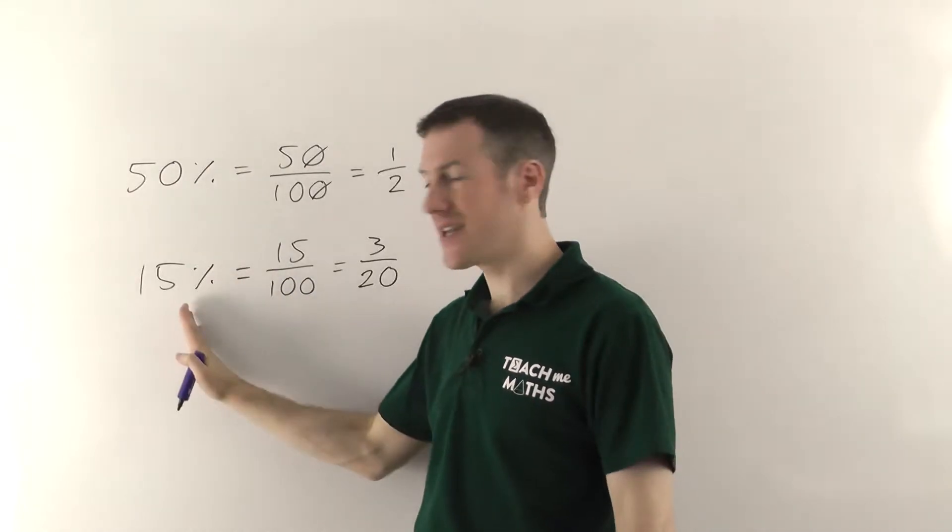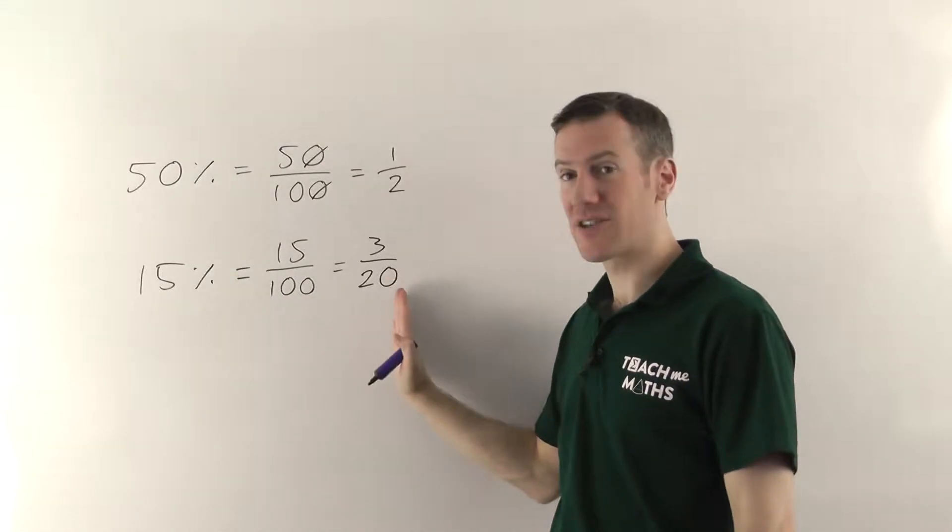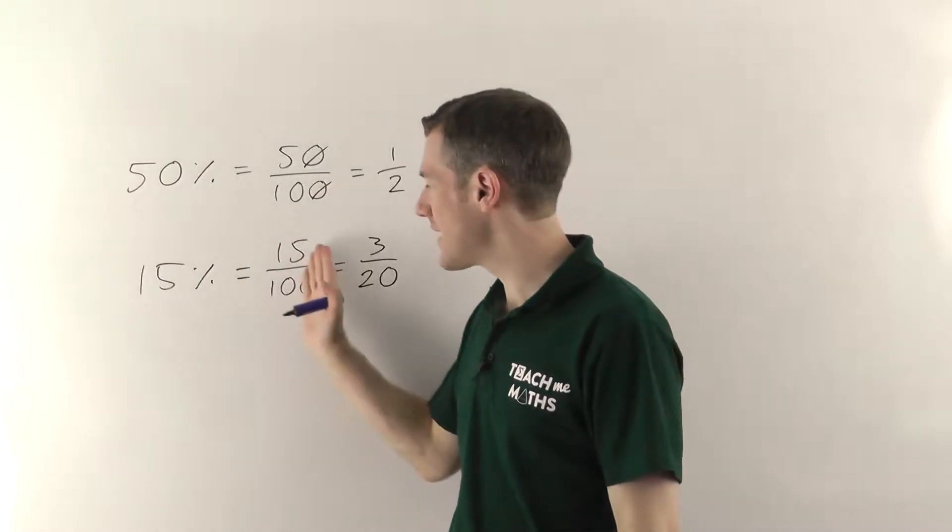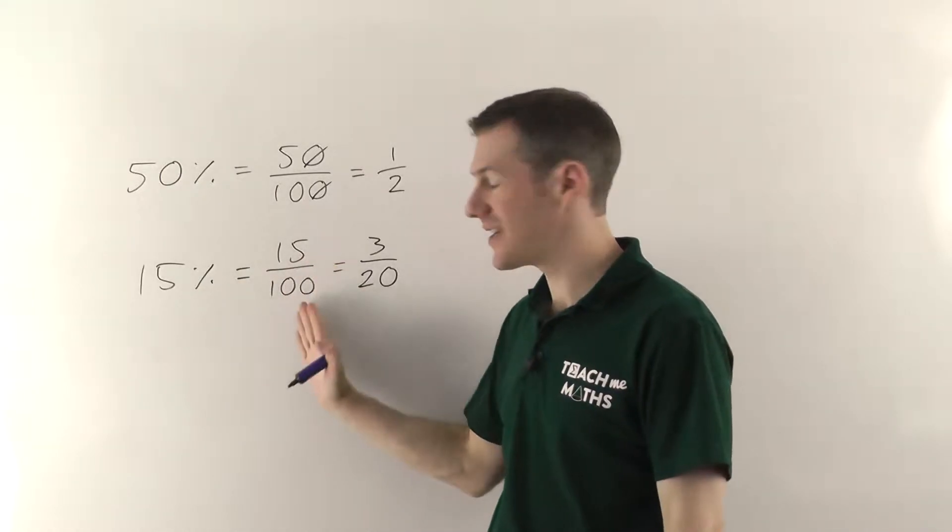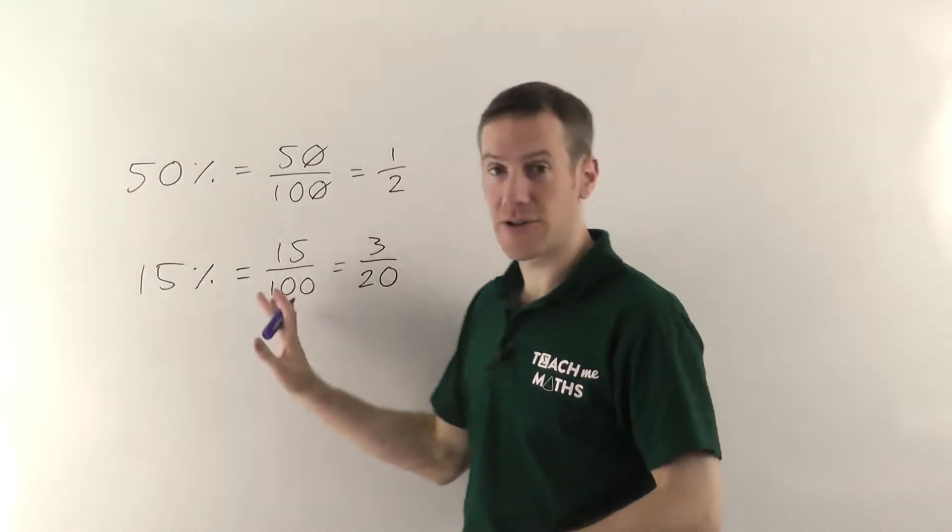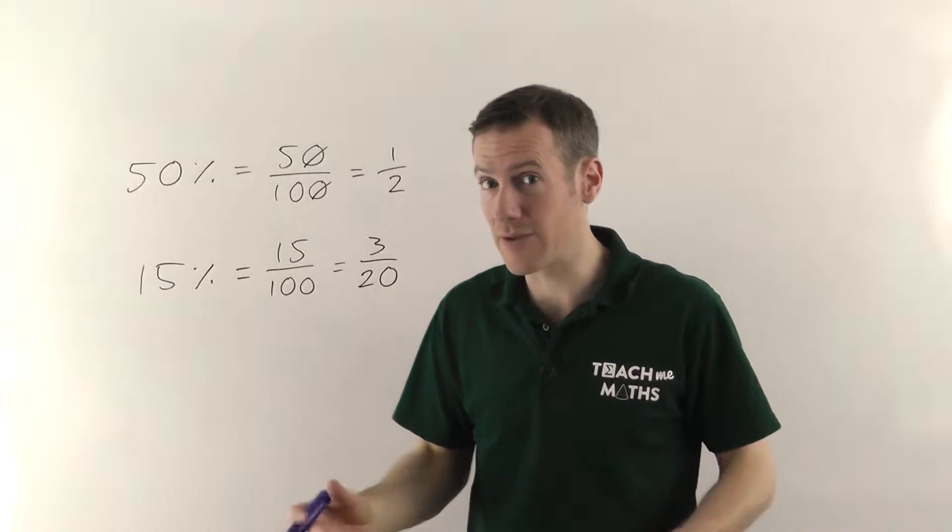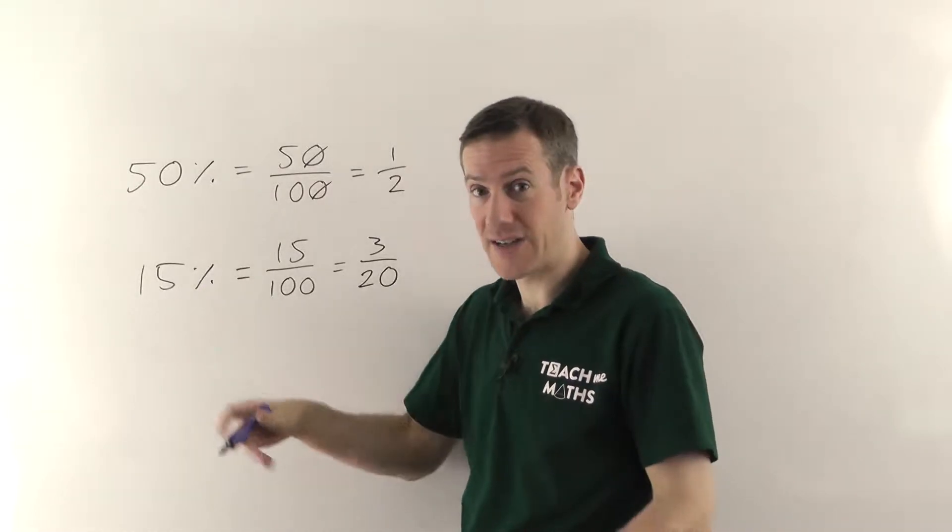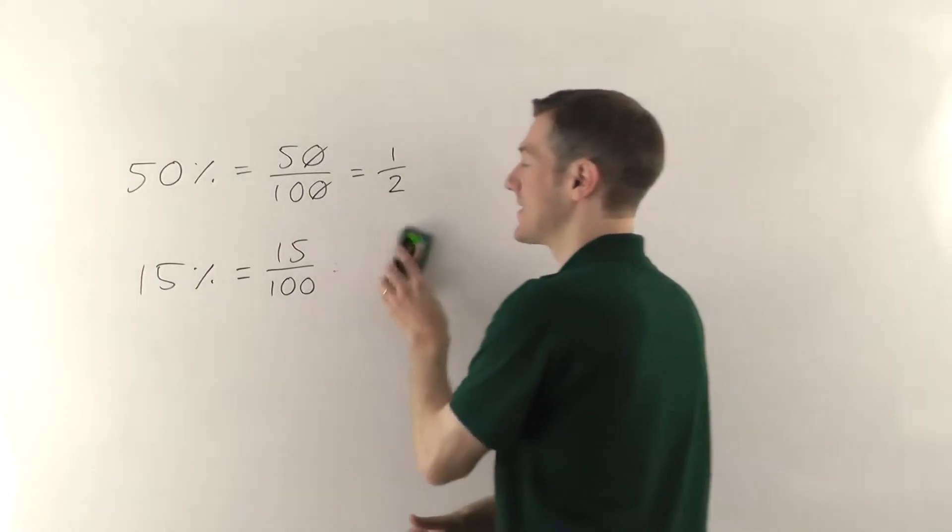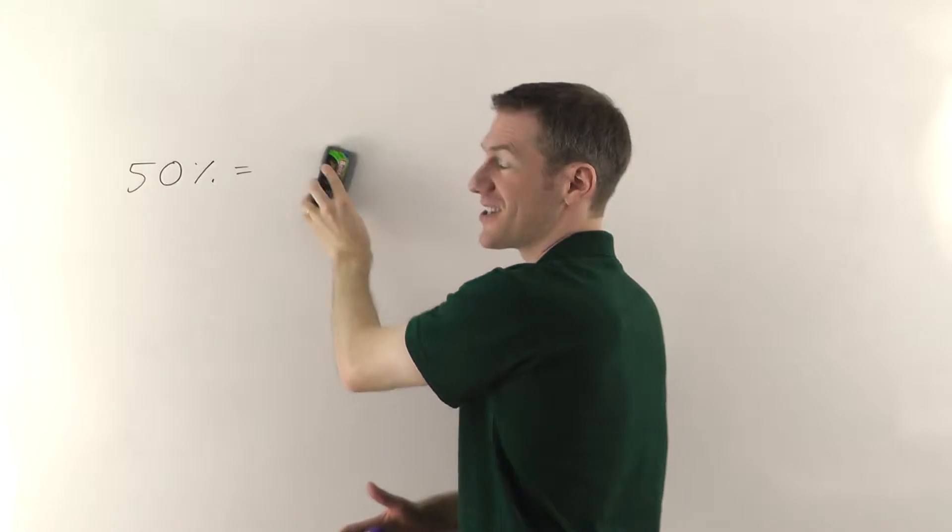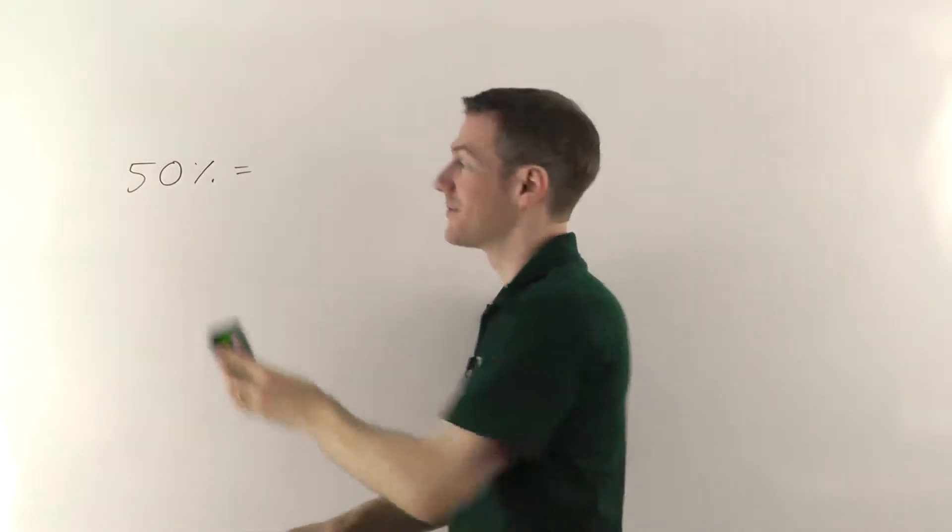But the point is that any percentage is simply a fraction. It's just another way of writing a fraction. And in general it's always the fraction out of 100. So 15% is 15 out of 100. So if you know how to deal with fractions, and for example finding fractions of amounts, then it's very easy to deal with percentages as well. Finding percentages of amounts is actually exactly the same as finding fractions of amounts. Because percentages are fractions. That's the one thing you've got to get straight in your head here.